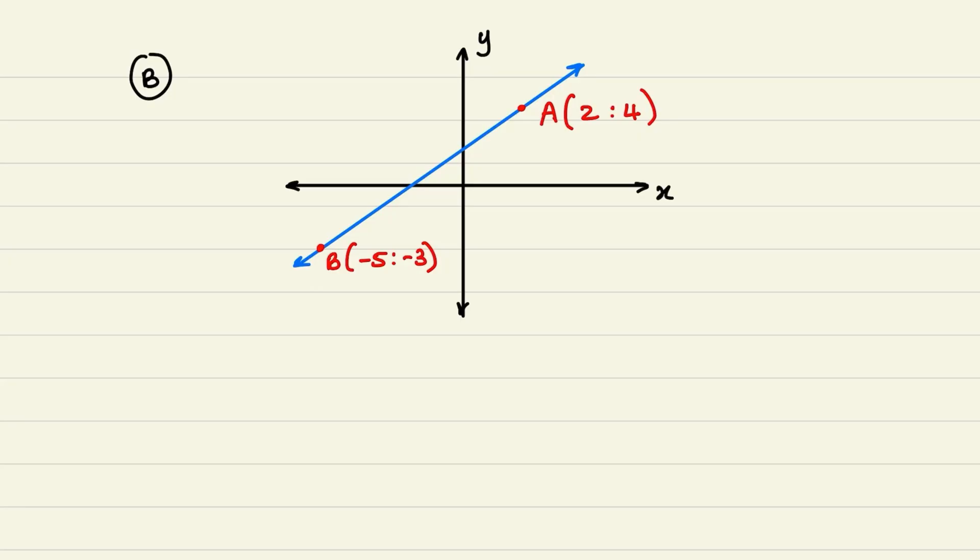In our second example, we have a line represented on the Cartesian plane. And on that line, we have two points, a and b. The coordinates of a is 2 and 4. And the coordinates of b is negative 5 and negative 3.